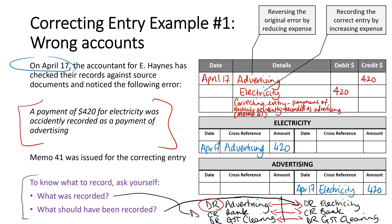This is an example of a simple correcting entry where it's the same amount — it's just that the wrong accounts have been used. If you'd like to look at some more correcting entries, there are two more videos available for extra help.